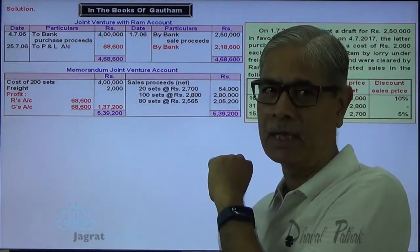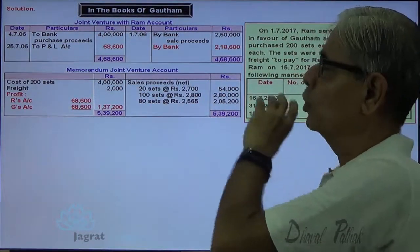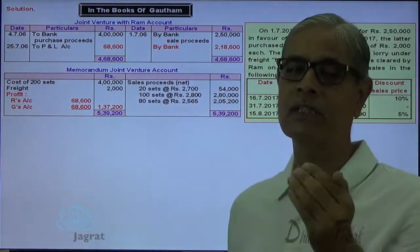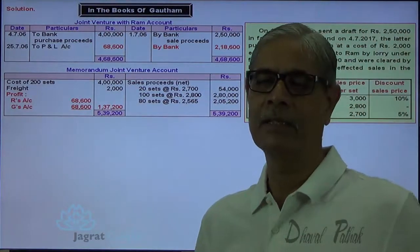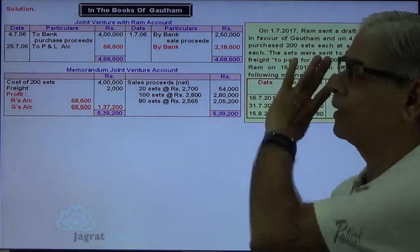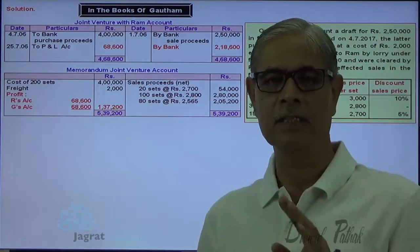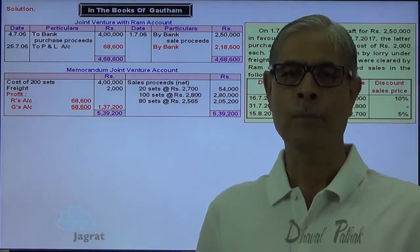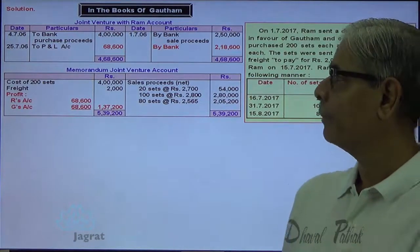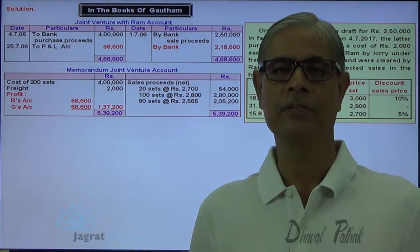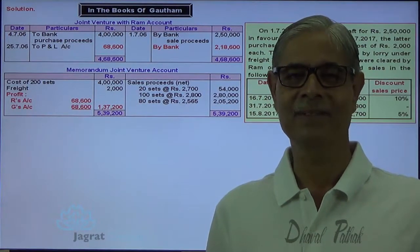Gautam paid for purchases Rs. 4,00,000 but received only Rs. 2,50,000 from Ram, so purchases paid out of Gautam's own pocket amount to Rs. 1,50,000. Adding the profit share of Rs. 68,600, the total amount due from Ram is Rs. 2,18,600. This is how the books of Gautam are recorded — he records only those transactions with which he is concerned. The memoranda joint venture account is prepared to find out the share in profit, profit is recorded, and the accounts are settled. This is how accounting is done by preparing the memoranda joint venture account in the books of both co-venturers.